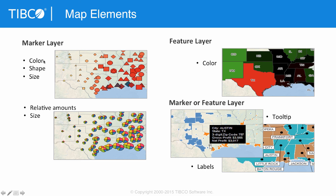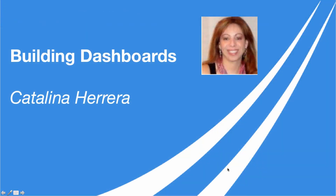Each of these elements can be controlled with columns in the dataset, just like any other Spotfire chart. You can control things like color, shape, and size by different columns of your dataset, put on relative amounts through pie charts, color the features, control over tooltips and labels — really a full-featured analysis.